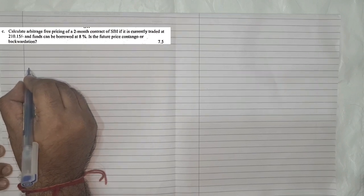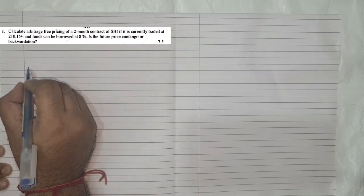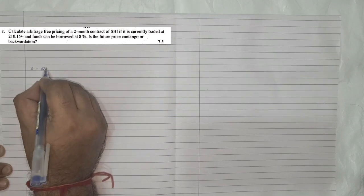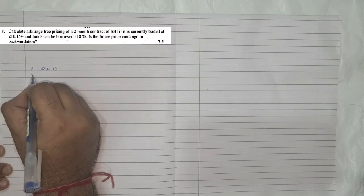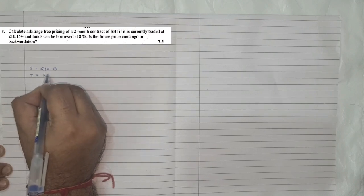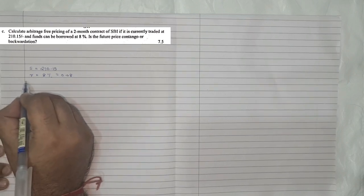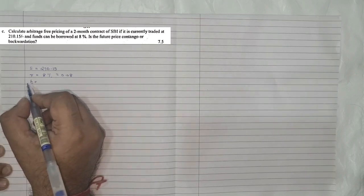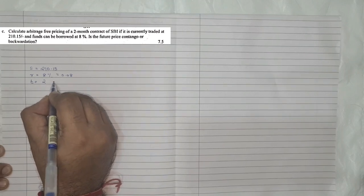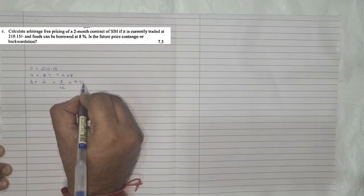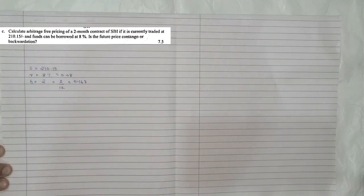From the question, the spot rate is 210.15. The borrowing rate is 8%, which is nothing but 0.08. The time period given is 2 months, so that is 2 divided by 12, which comes to 0.167. They are asking us to find the arbitrage free pricing.